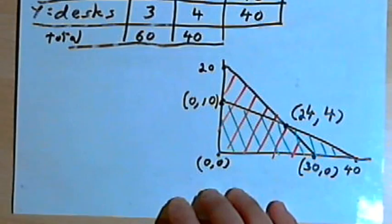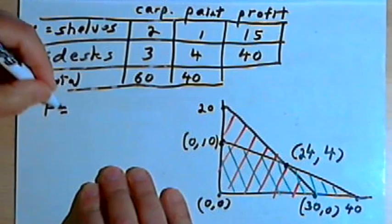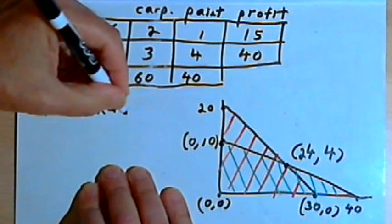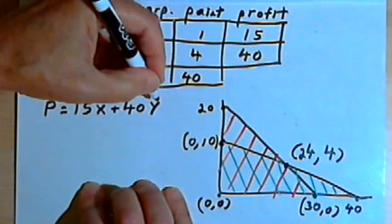Now we can try to figure out how the company will make the most profits. So let's make a profit equation. The profit the company makes, P, would be equal to $15 times the number of shelves, so that's 15x, plus $40 times the number of desks, so that's 40y.